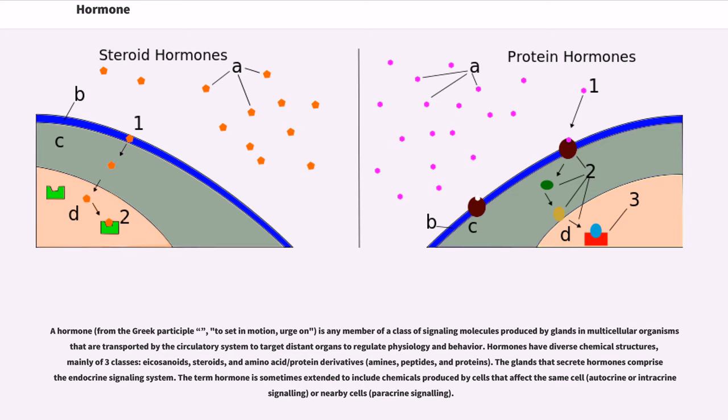Hormones have diverse chemical structures, mainly of three classes: eicosanoids, steroids, and amino acid-slash-protein derivatives: amines, peptides, and proteins.